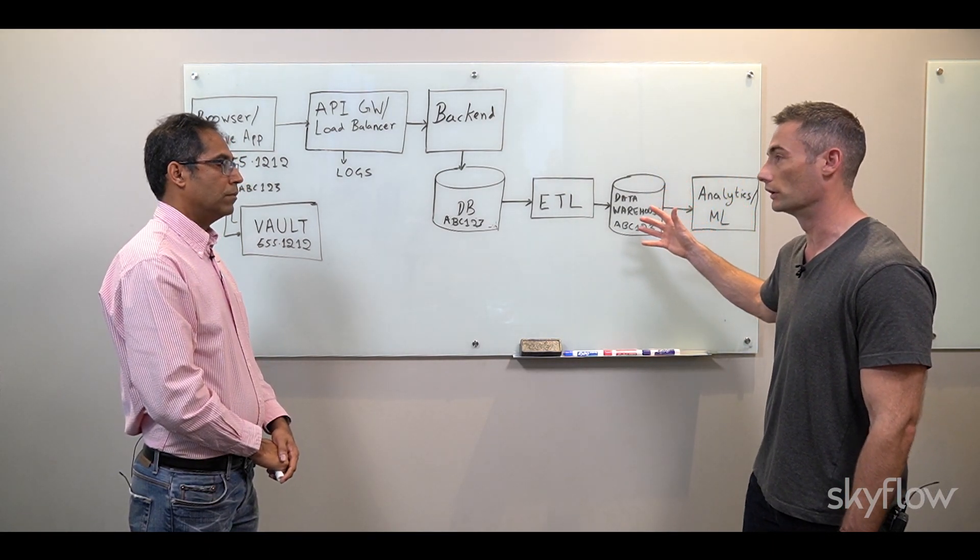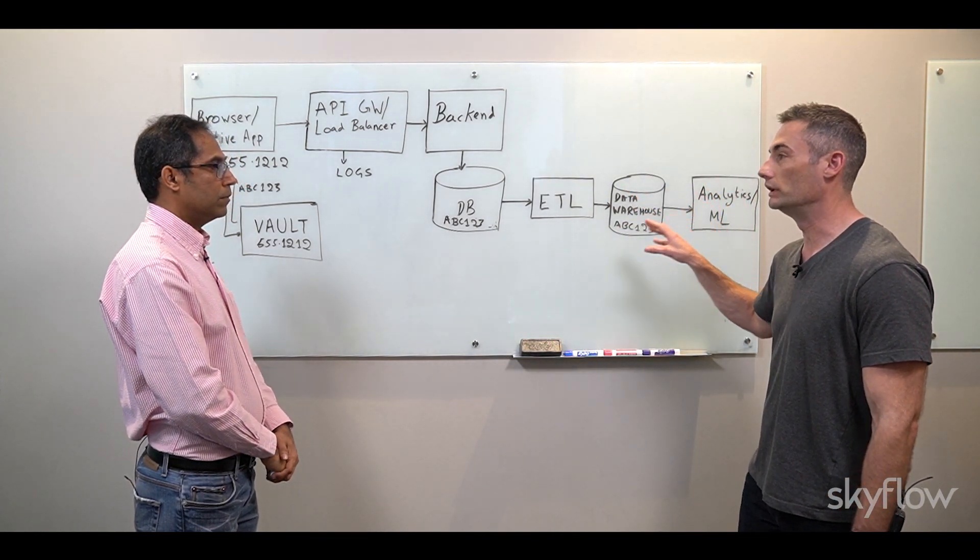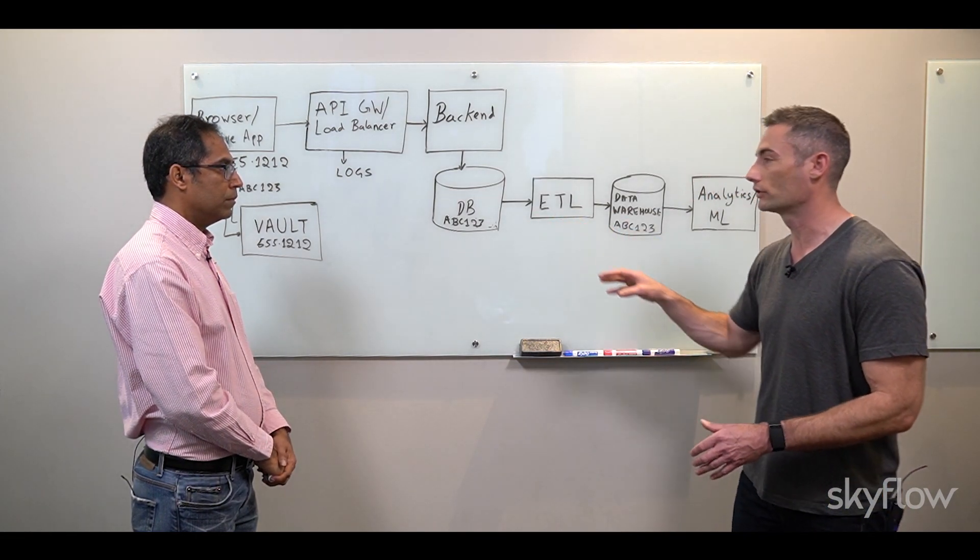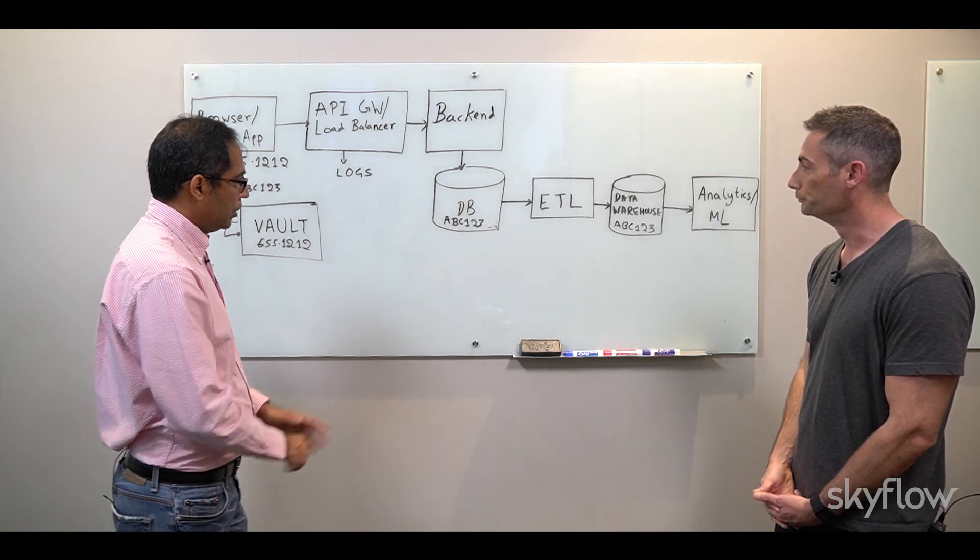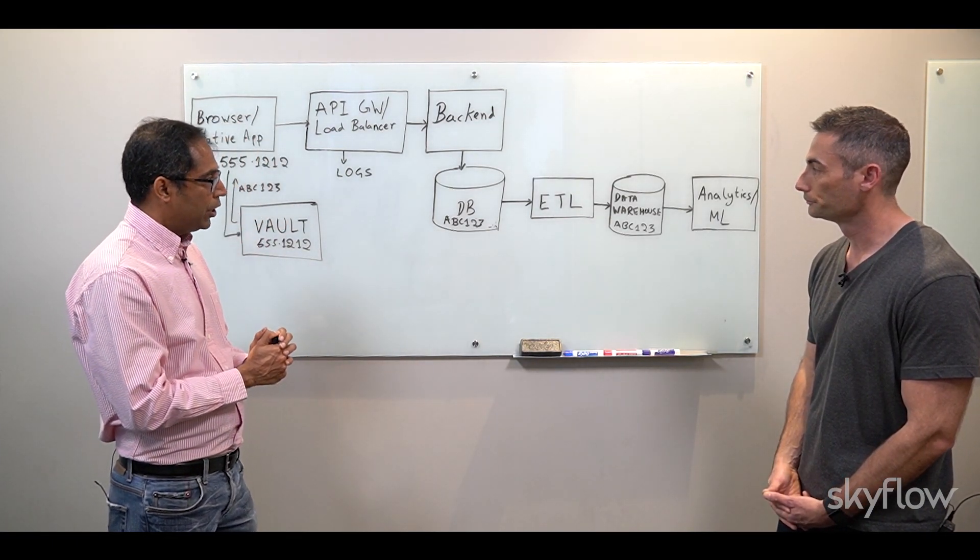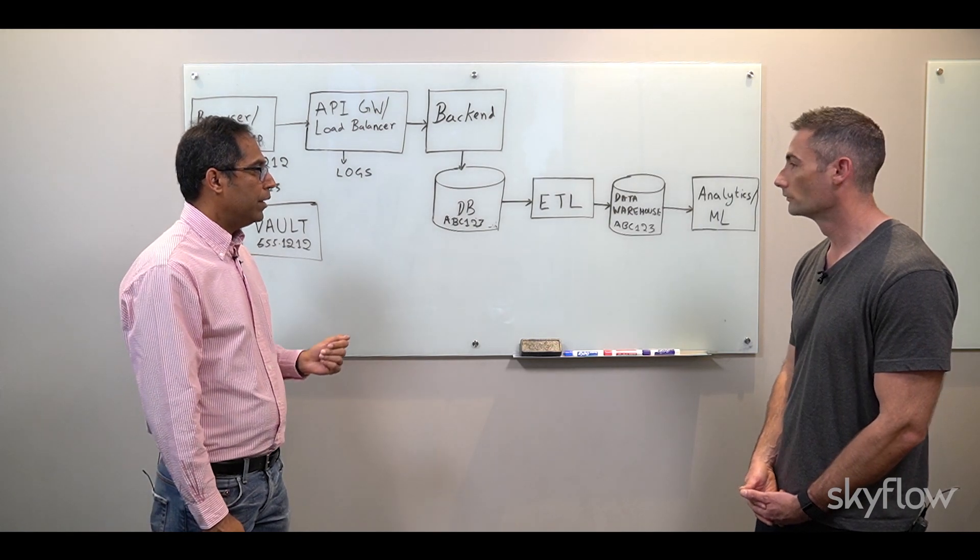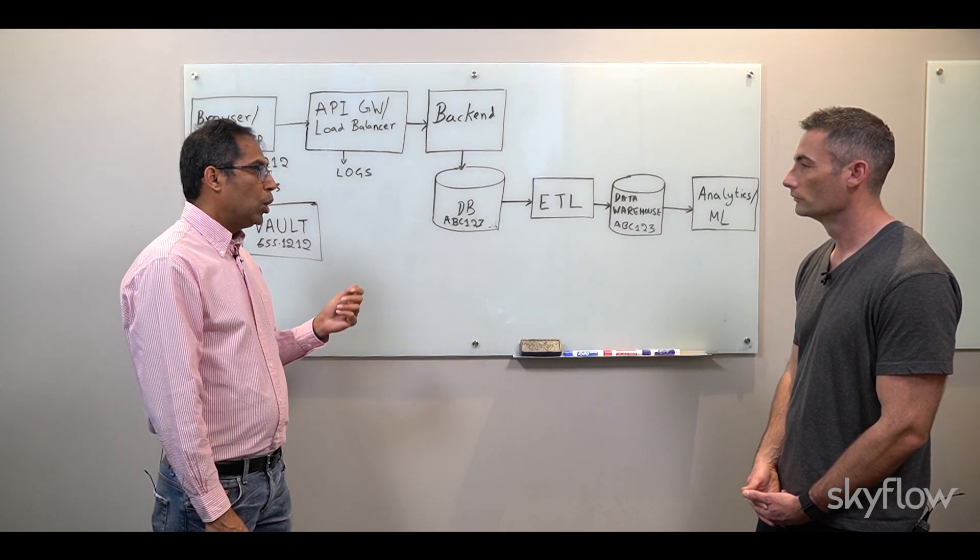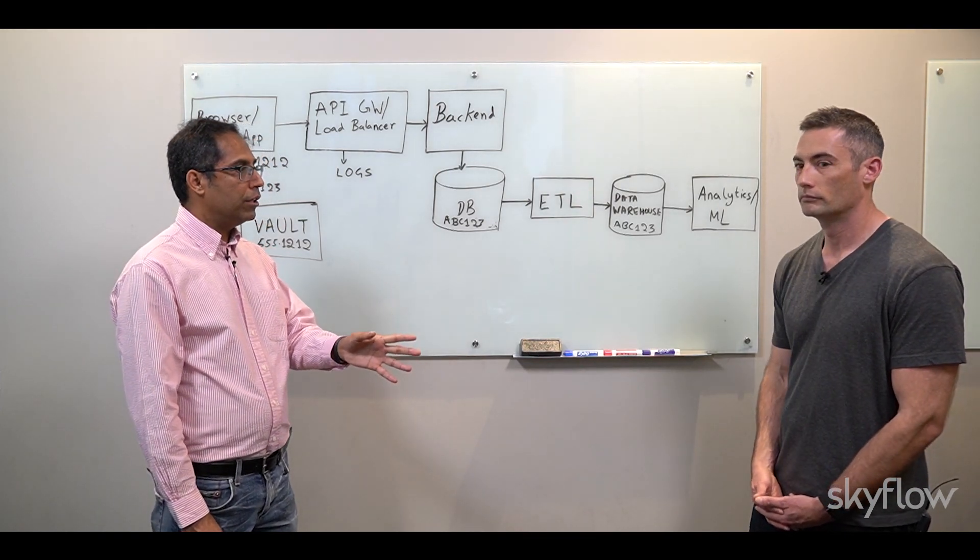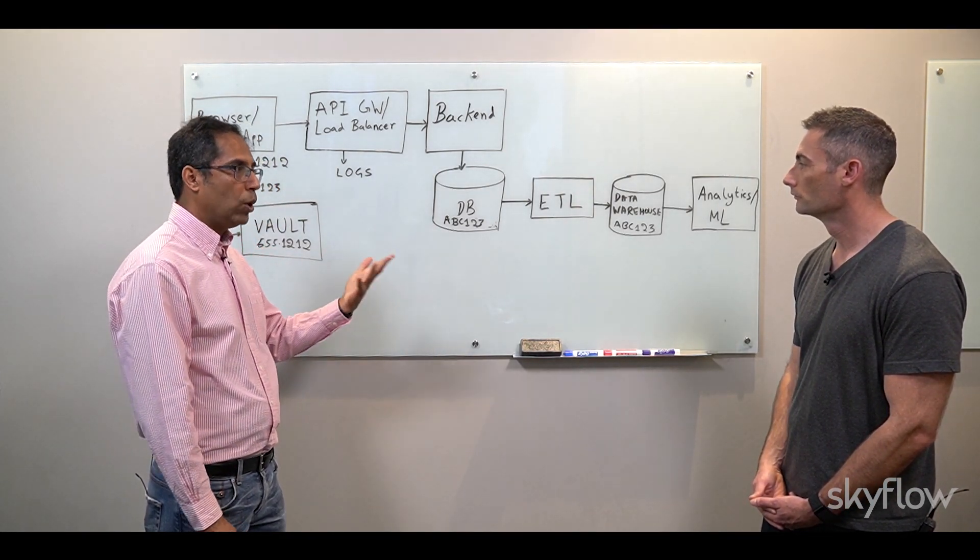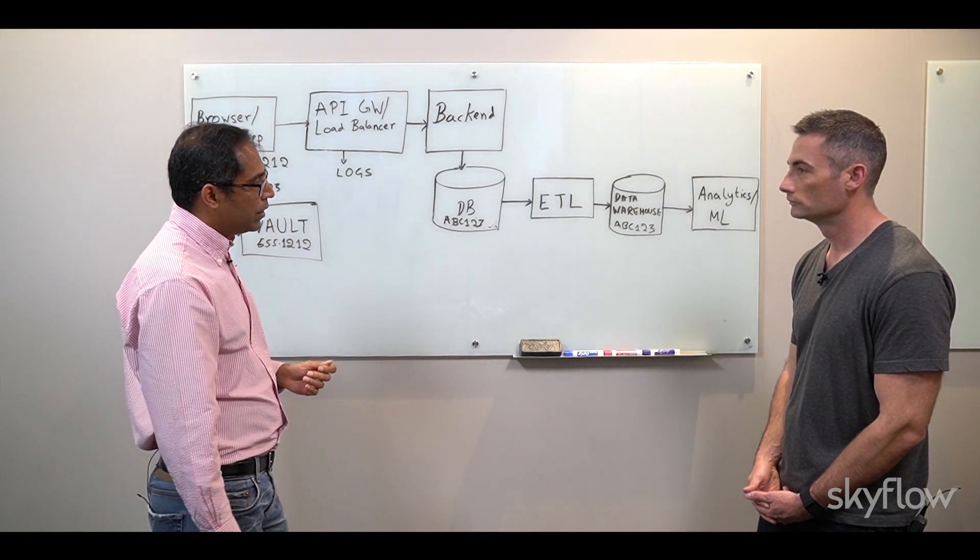I see, okay so essentially what we're doing here is we're moving the phone number and presumably other customer data into the single source of truth of the data privacy vault and then returning tokenized versions of that data and then storing the tokenized versions through our existing infrastructure. Exactly. But how do we actually address the issue of access? Presumably not all these systems need to be able to de-tokenize the data but some of them probably do. So how do we control access to the systems that can tokenize and de-tokenize the data and actually access the plain text values? That's a great question. So I think the first observation we need to make here is that for a lot of accesses you don't actually need to access the data element in question.